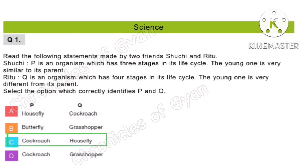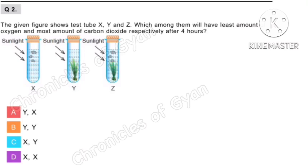Question 2. The given figure shows test tubes X, Y and Z. Which among them will have the least amount of oxygen and the most amount of carbon dioxide respectively after 4 hours? Test tube X will have the least amount of oxygen and the most amount of carbon dioxide after 4 hours. Correct option is D.